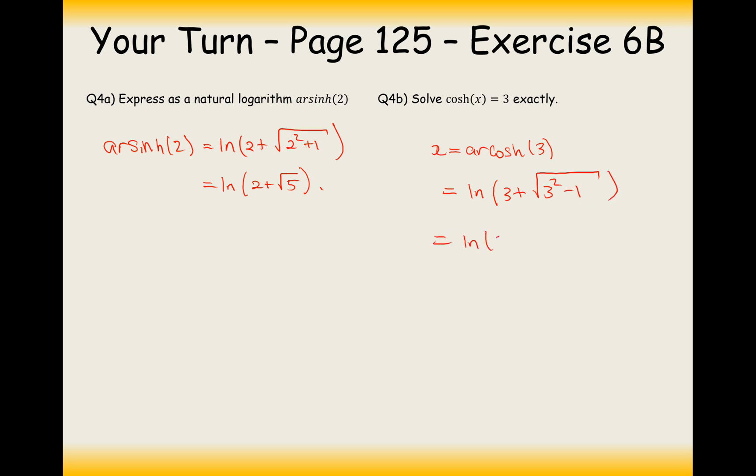Or in fact, ln 3 plus 2 root 2. But then if cosh has two solutions, like it always does, one solution over here, one solution over here, then the actual answers, x equals, are going to be plus or minus ln 3 plus 2 root 2. So there we are. That's the answer for both of these questions then. So have a go at plenty of the questions from exercise, so page 125 exercise 6B. I don't think there's actually too many for this exercise here. So you might as well just have a go at all of them then. Lovely. Thanks very much for watching.